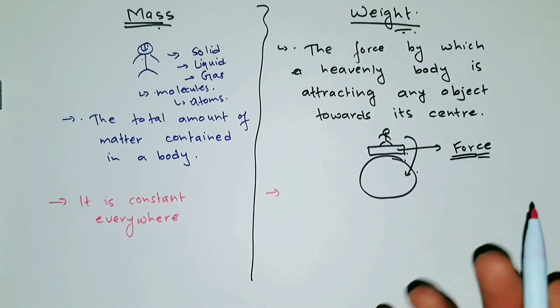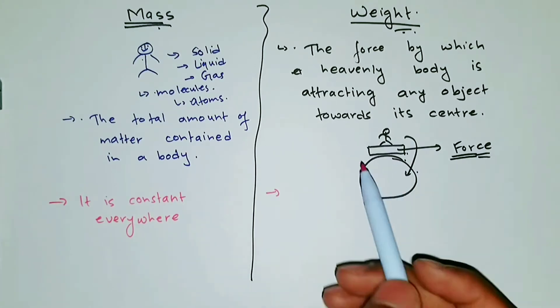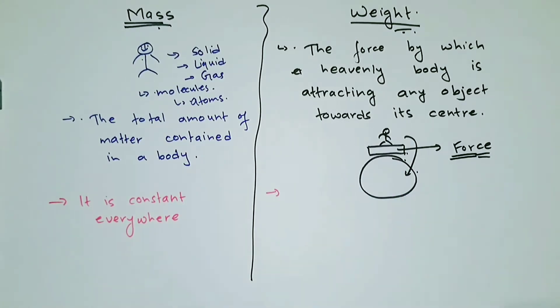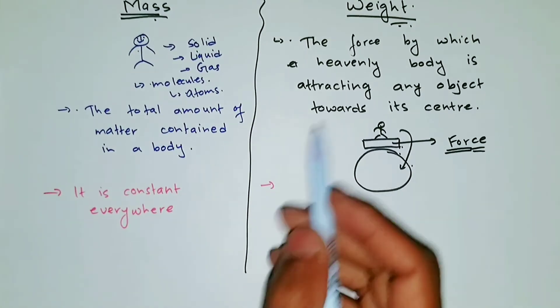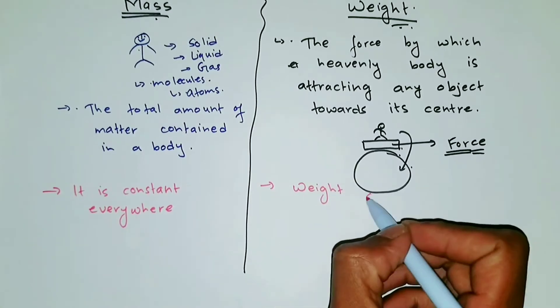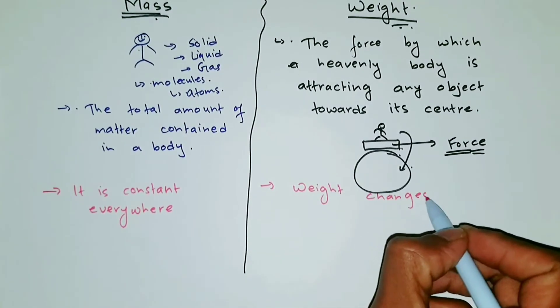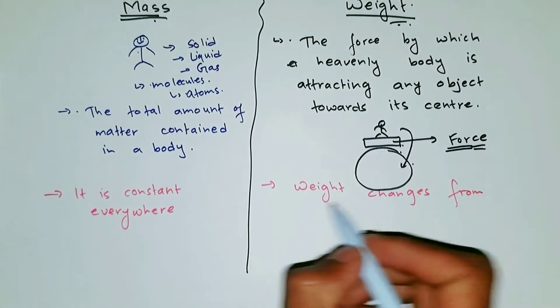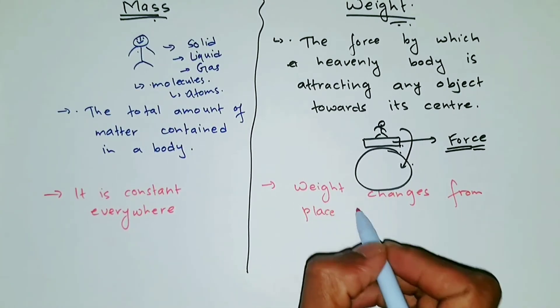Whereas weight changes from place to place, because the gravity or force is different from planet to planet. So if you go to Moon, your weight will decrease, or if you go to Jupiter, because the force of gravity is high there, your weight will increase. So weight changes from place to place.